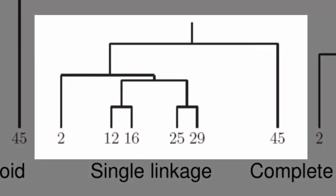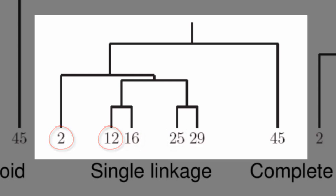Under single linkage, I would also group {12, 16} and {25, 29}, but the next step differs. You can tell this from the heights at which clusters are merged. The cluster {12, 16} gets merged with {25, 29} next. The reason is that the closest point between these two clusters is 16 and 25, with a difference of 9, whereas the difference between 2 and 12 is 10 and between 29 and 45 is 16. So {12,16} and {25,29} are merged, and then the process continues.